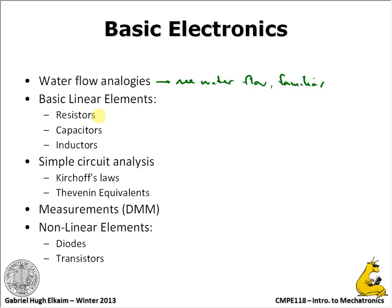So what we've got are the basic linear elements: resistors, capacitors, and inductors. We'll get into some simple circuit analysis — Kirchhoff's laws. I've seen this spelled in about 18 different ways. It's an American spelling of a name, and everyone has a different one. But basically there are two of them: Kirchhoff's current law and Kirchhoff's voltage law.